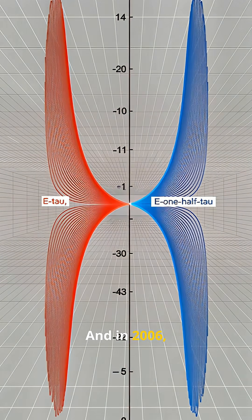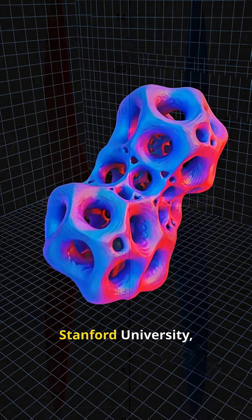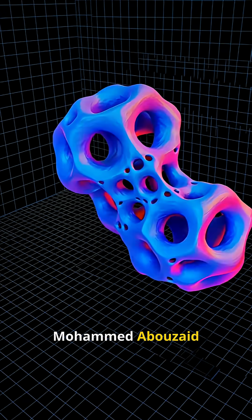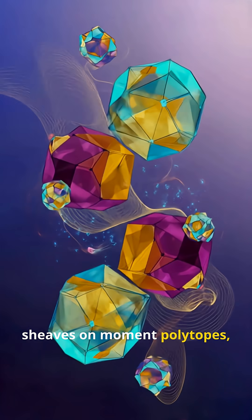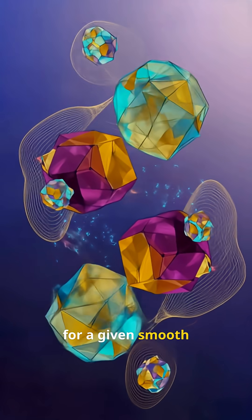And in 2006, now professor of mathematics at Stanford University, Mohamed Abouzaid proved the conjecture using constructible sheaves on moment polytopes for a given smooth toric variety, constructing a sequence of Lagrangian submanifolds.